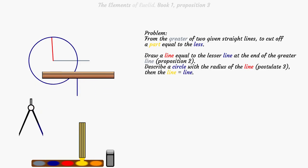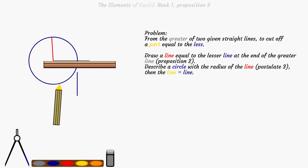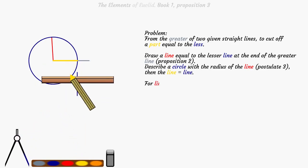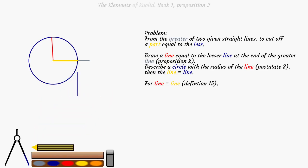Then the yellow line is equal to the blue line. For the red line is equal to the yellow line, definition 15, and the blue line is equal to the red line, proposition 2. Therefore the blue line is equal to the yellow line.